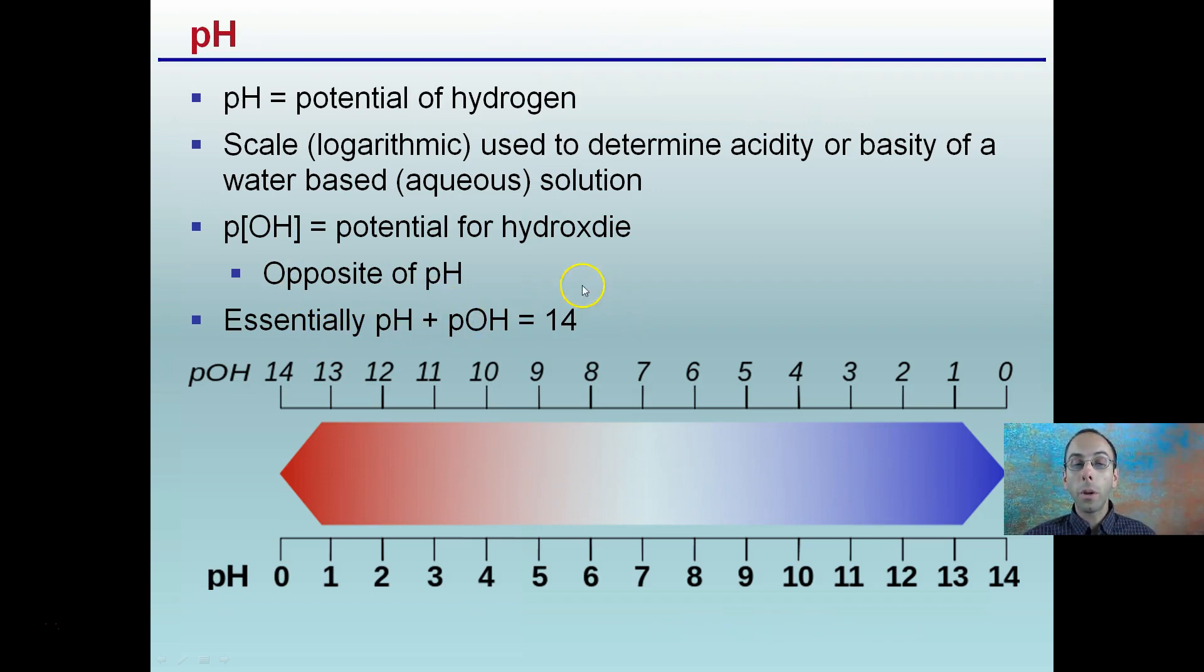Essentially, pH plus pOH equals 14. That's our 0 to 14 scale. If we take a pH of 7, 7 plus 7 is 14, so the pH is 7 and the pOH is also 7.